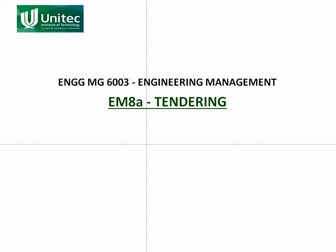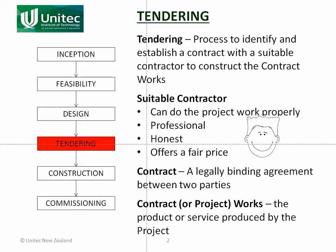In this slidecast we're going to look at tendering. First of all, what is tendering? It's the process to identify and establish a contract with a suitable contractor to construct the contract works. You can see that it happens after design. We've done our design, we've produced drawings, we've produced specifications to state exactly what we want built. Now we need someone to build it. That's what the tendering process is all about.